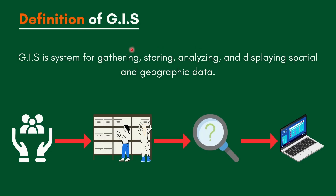These four keywords are extremely important because the marker will look out for them. If you have these four keywords — gathering, storing, analyzing, and displaying — your answer will be marked correct. If you don't, it will be marked wrong. So remember: first you gather the information, then you store it, then you analyze it, and then you display it.